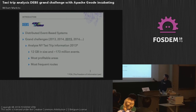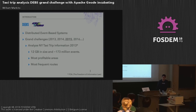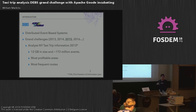Every year they post grand challenges, and for 2015 they posted a challenge about analyzing taxi trip information that was available for the New York taxis in 2013. The dataset is actually small,